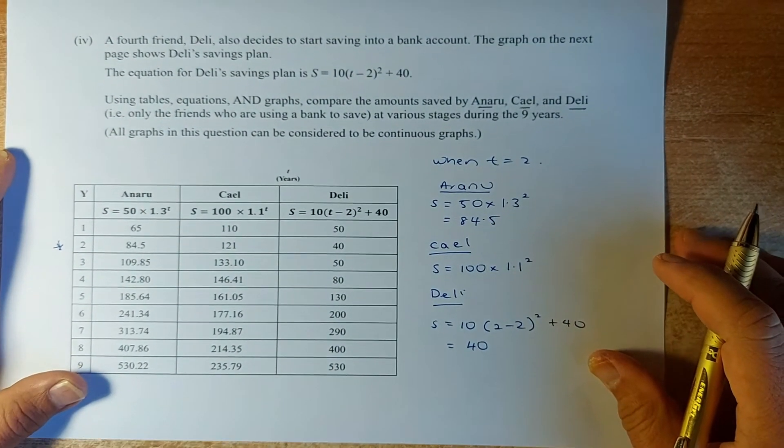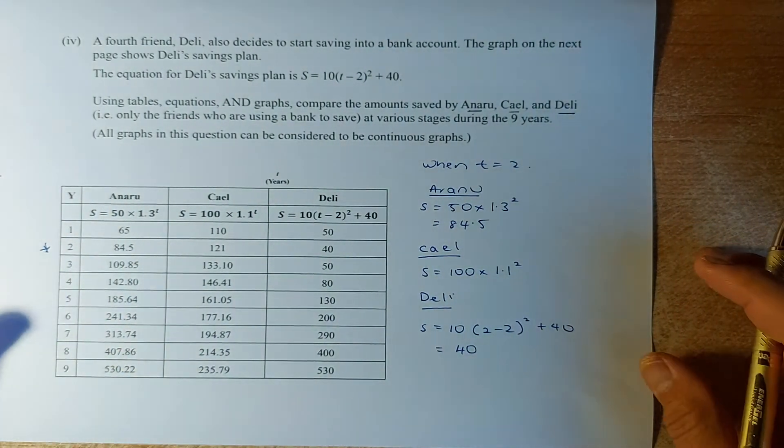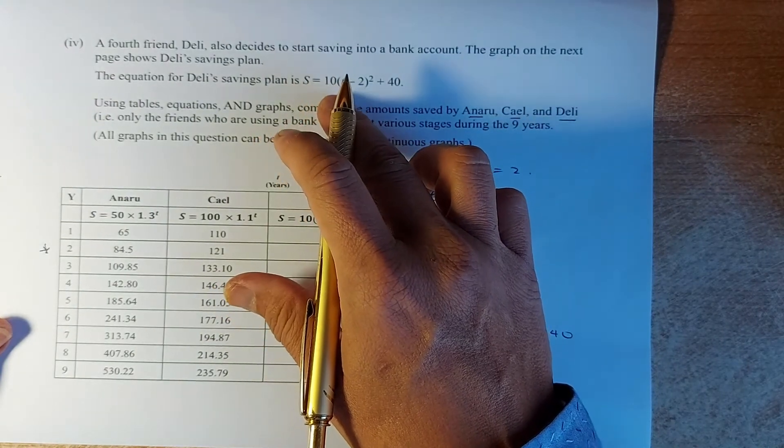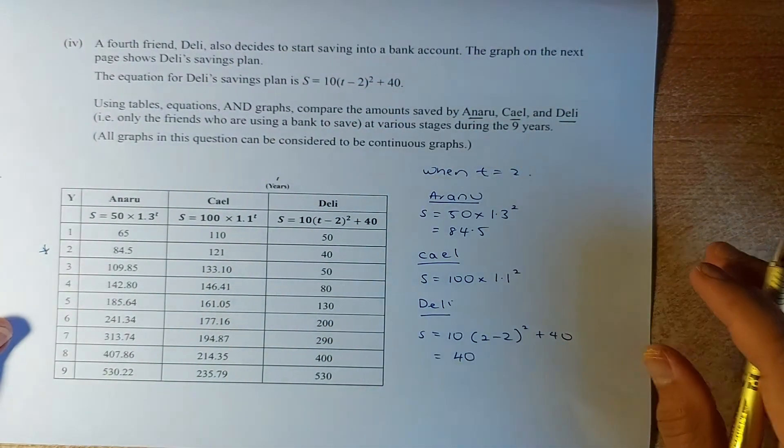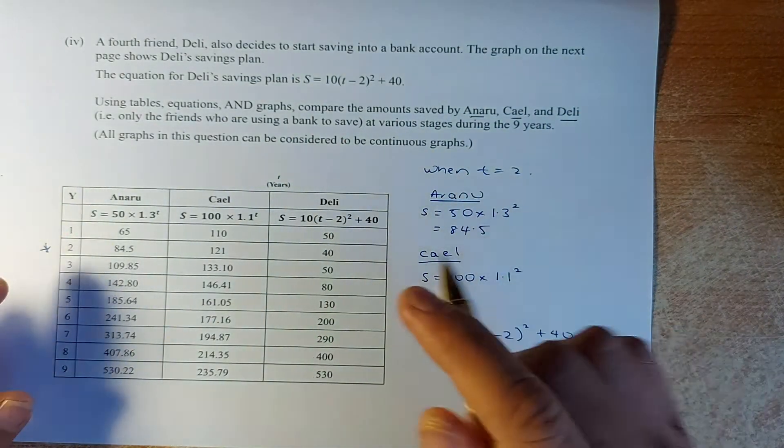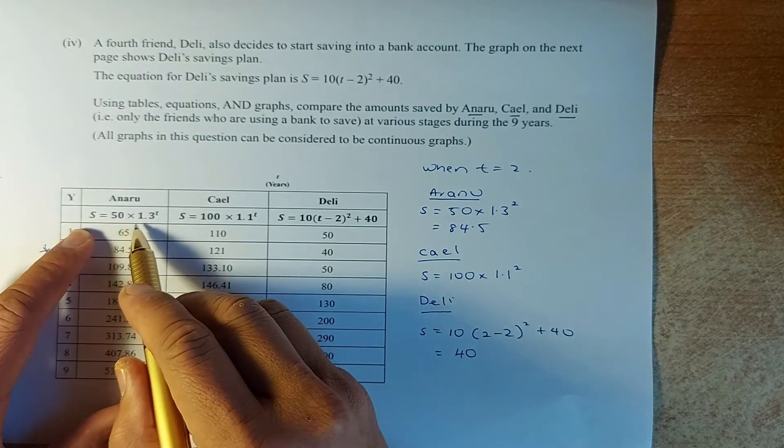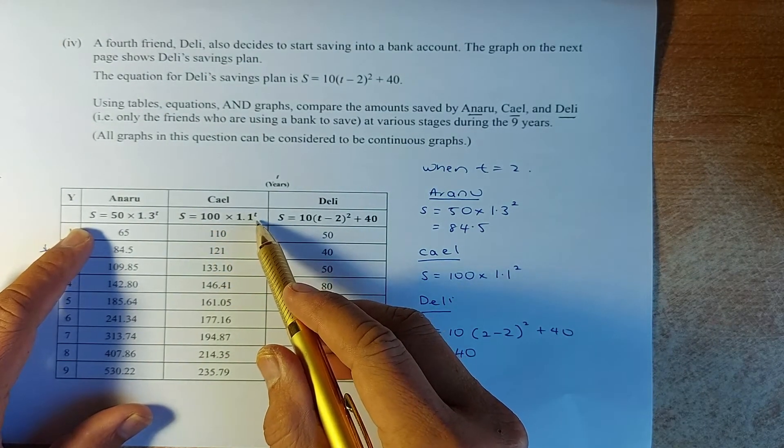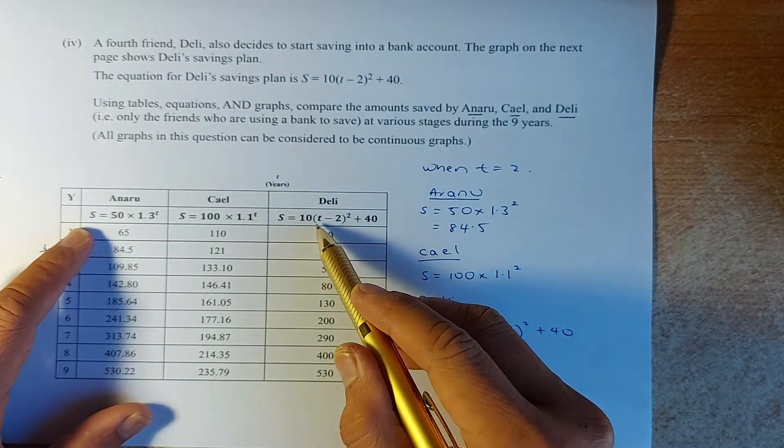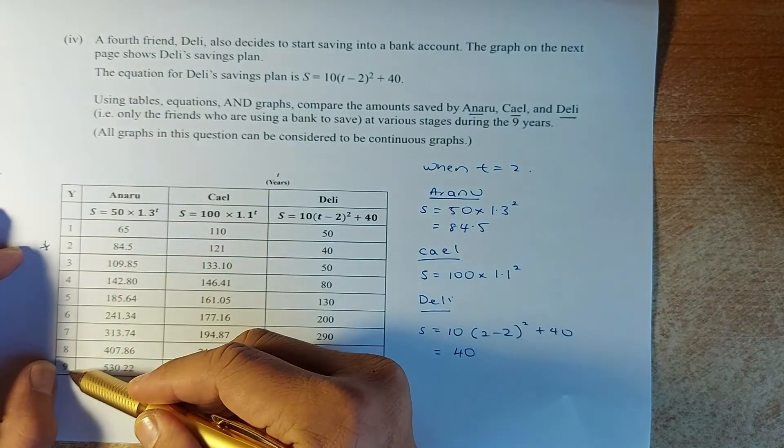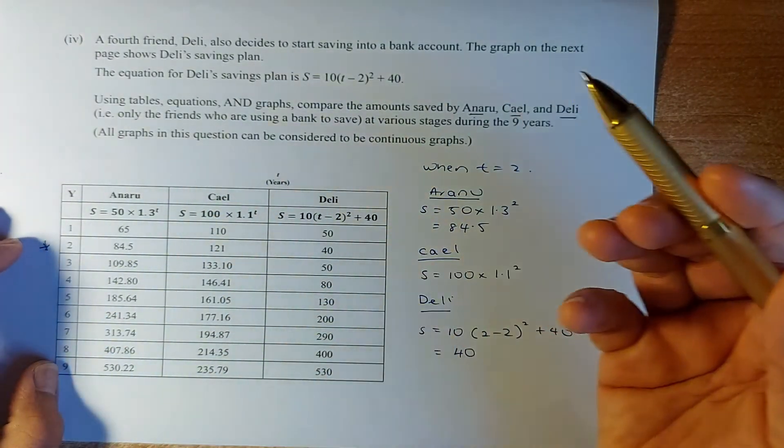Great. Now, we look at question 4. This is the excellence question. So now we have another friend. His name is Deli. He's got the equation. The graph on the page shows Deli. So that equation for Deli's saving is S equals to 10(t minus 2) squared plus 40. I will show you the graph later. Okay, using tables, equations and graphs, compare Anaru, Deli, and Kale. So we shall do only 1. So we know the formula for Anaru is S equals to 50 times 1.3 to the power of t based on the previous example. Kale is 100 times 1.1 to the power of t. We also found that in the previous example. And Deli's formula is given here: 10(t minus 2) squared plus 40.